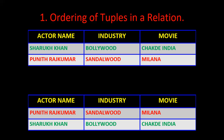I made the second tuple first and the first tuple second. In the new table, Puneet Rajkumar still works in Sandalwood and acted in Milana — changing the row order has not affected his details. Similarly, Shah Rukh Khan still worked for Bollywood and acted in Jagde India. This shows that in a relation, ordering of tuples is not important; we can change the order and it gives the same meaning.